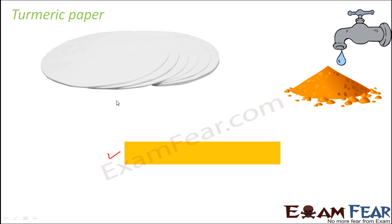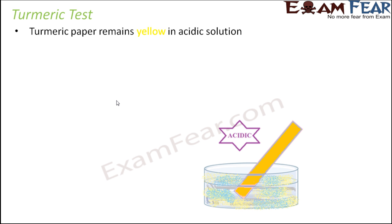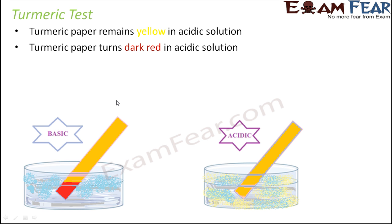Now we will see how the color changes in case of turmeric paper. The turmeric paper remains yellow in acidic solution, so there is no change in color. However, when it is put into a basic solution, it becomes dark red. So in acidic solution it will remain yellow, but when put in basic solution it will turn dark red. Looking at this color difference we can decide whether the solution is acidic or basic in nature.